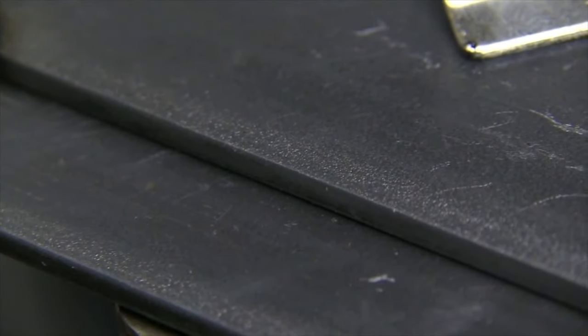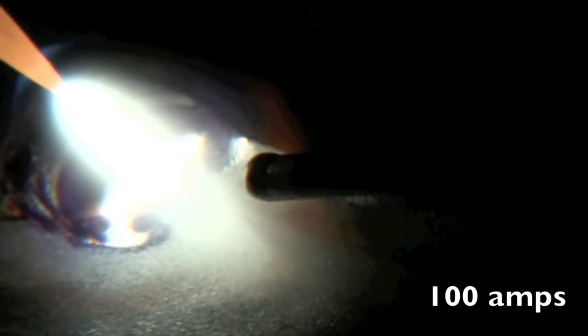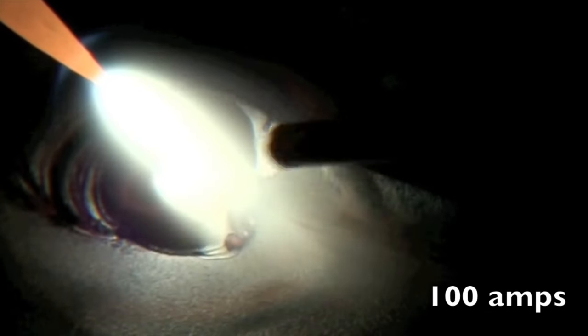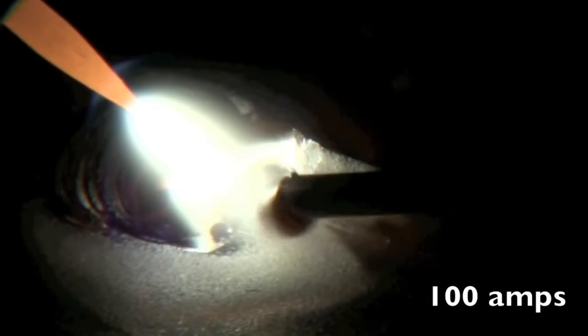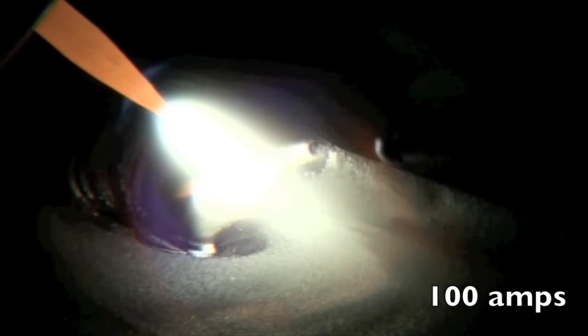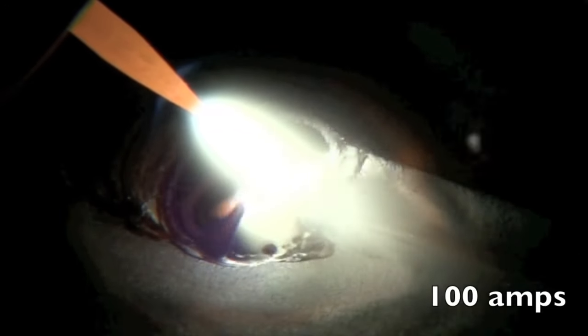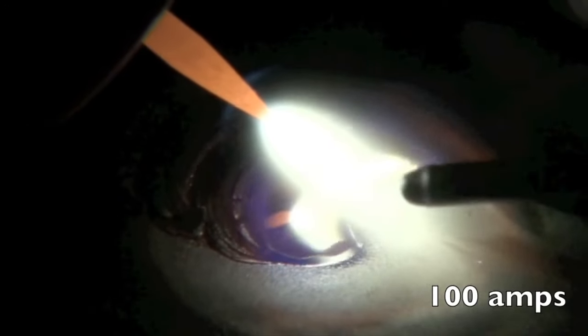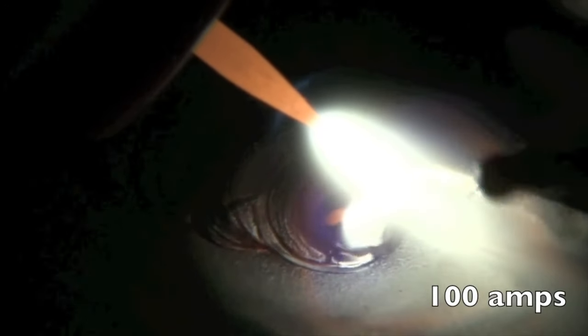Next we're going to talk about lap joints and start off with 11 gauge carbon steel. But before we even get into the good stuff, I want to really drive home the point of the importance of a tight arc and not using too much electrode angle.